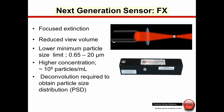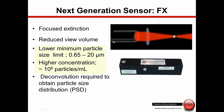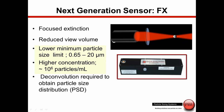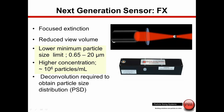The next advancement with the sensors was to focus the laser beam. By focusing the laser beam we accomplish two things: we increase the intensity, and we also essentially reduce the inspection zone. When we reduce the inspection zone we can work at higher concentrations. Using a focused laser beam with an extinction detector, this is the AccuSizer FX sensor, which has a dynamic range of 0.65 to 20 microns but has the ability to work at much higher concentrations up to the order of a million particles per ml.